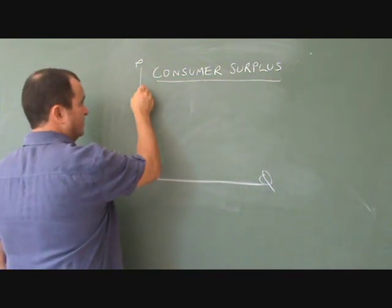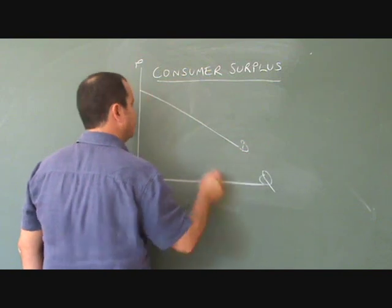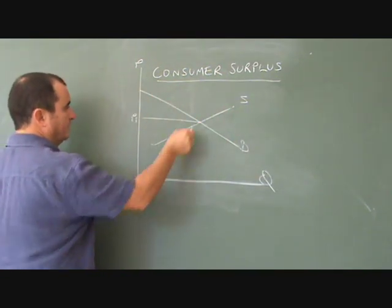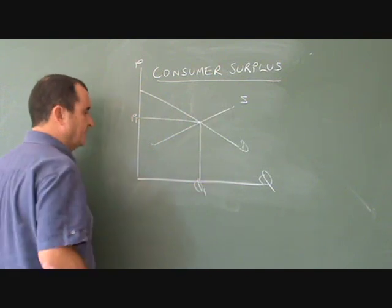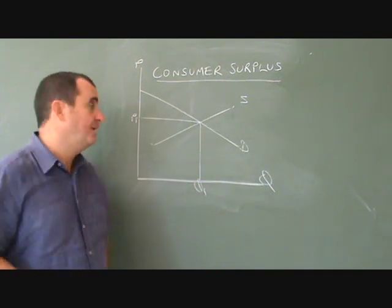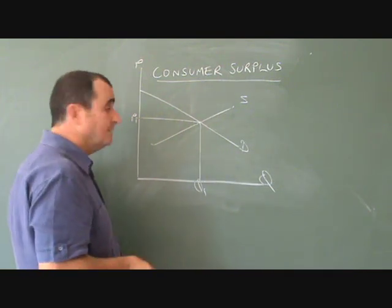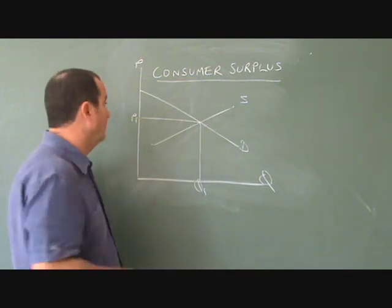On a diagram where we have a demand curve and a supply curve, we know that the equilibrium price will be at P1, the quantity Q1 is being sold. People that are not prepared to pay P1 simply don't buy the product, but some people were prepared to pay more than P1.